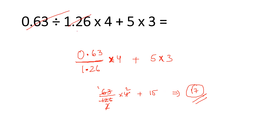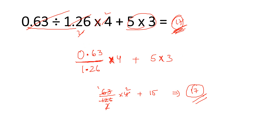Actually the question is straightforward: 0.63 divided by 1.26 is 0.5, times 4 is 2. Then 5 into 3 is 15. 15 plus 2 is 17. This is the answer. If there are more decimal points, multiply through to cancel and avoid confusion in the denominator.